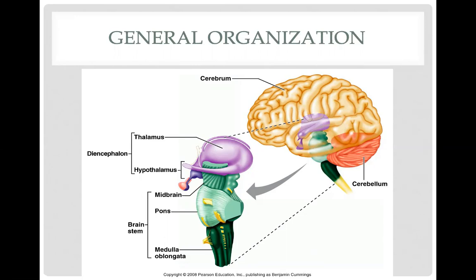Please keep in mind that even though I've listed a number of functions for each of these structures, there is much more going on in the brain than what is covered here. At the core of your brain, hidden by the cerebrum, you have a structure depicted in purple referred to as the diencephalon. The diencephalon has three major parts: the thalamus and hypothalamus, which are labeled here.